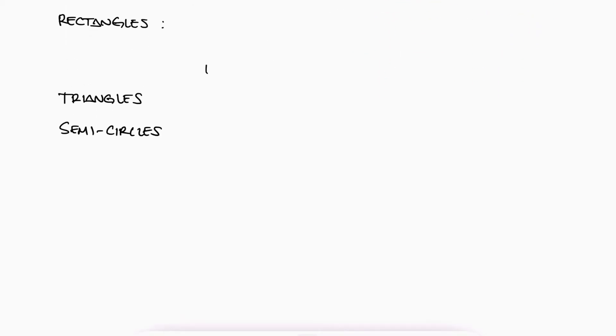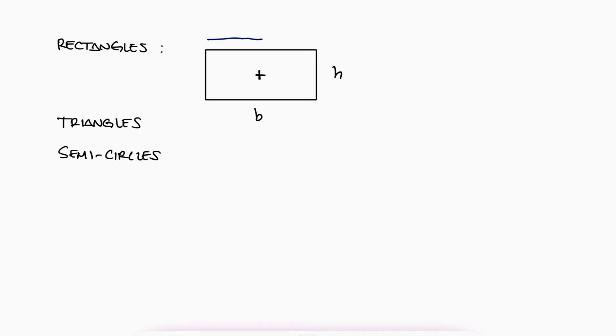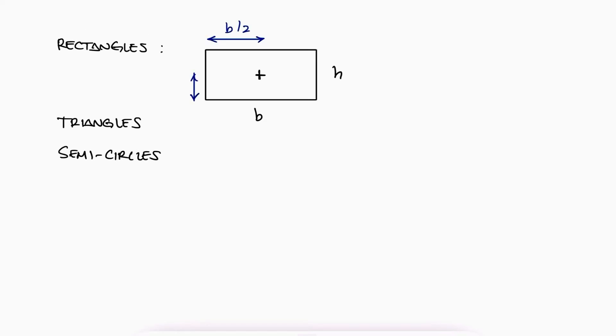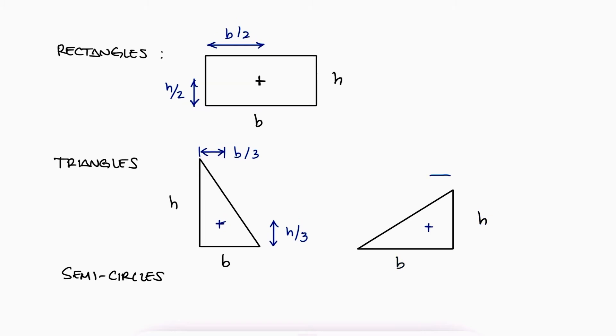Of course, you already know where the centroid for a rectangle is located, since it's pretty intuitive. We just found the centroid for a right triangle, and if you perform the same process by changing the orientation of the triangle, it will still hold true.